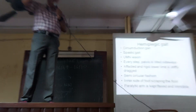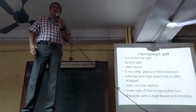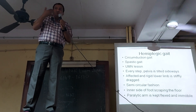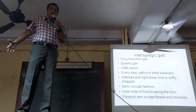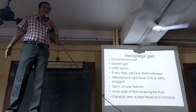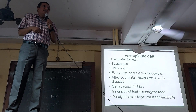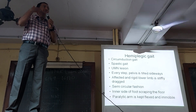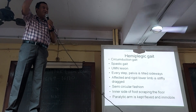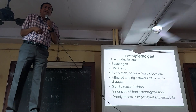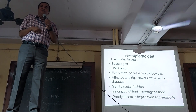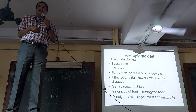What has happened is there is an upper motor neuron lesion. Now suppose on the right side, hemiplegia has occurred. Because of the upper motor neuron lesion, there is spasticity on the right side.